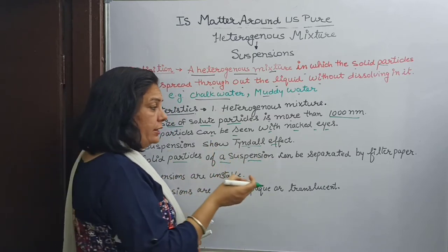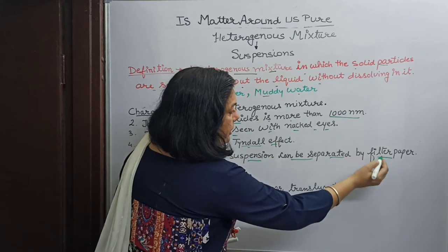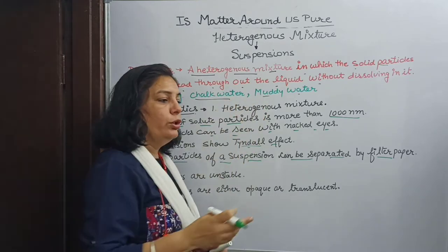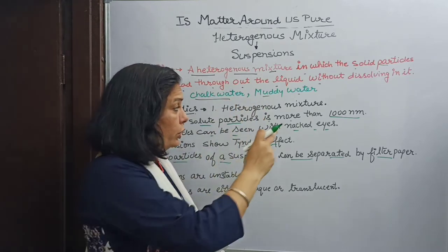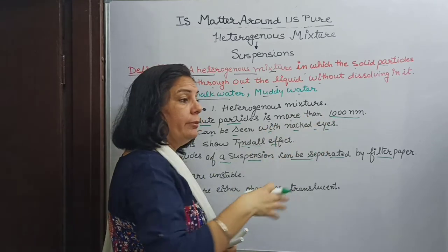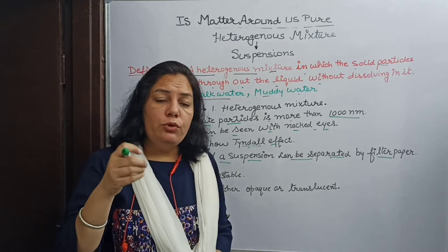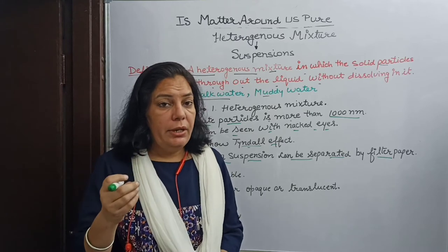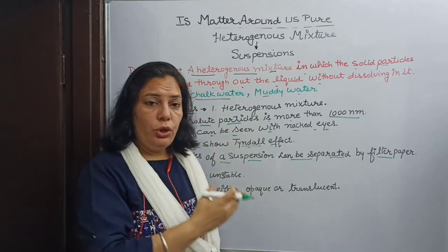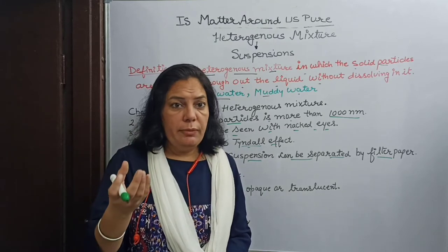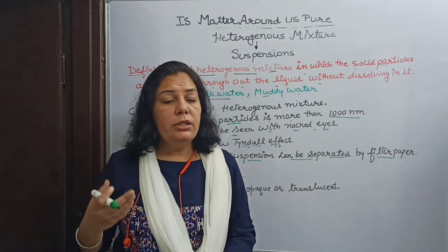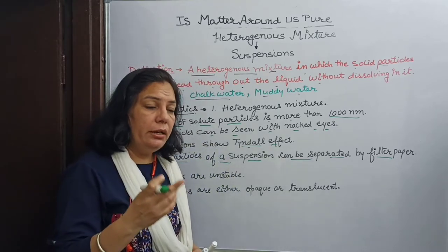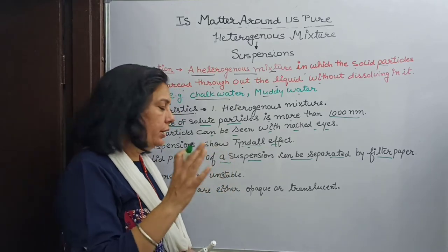Solid particles of a suspension can be separated by filter paper. Since the solid particles are more than 1000 nanometers in size, they are not allowed to pass through filter paper. We can separate the solid particles by the filtration method, and we get comparatively clean water on the other side.